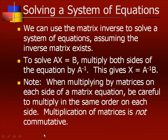We can use the matrix inverse to solve a system of equations, assuming the matrix inverse exists. To solve AX = B, multiply both sides by A⁻¹, giving X = A⁻¹B. Remember — when multiplying by matrices on each side of a matrix equation, be careful to multiply in the same order on each side, because multiplication of matrices is not commutative.